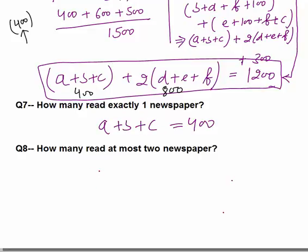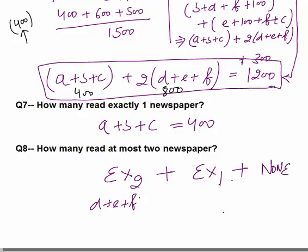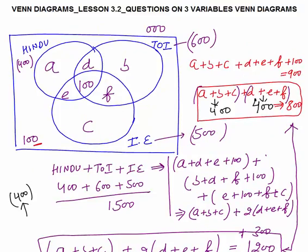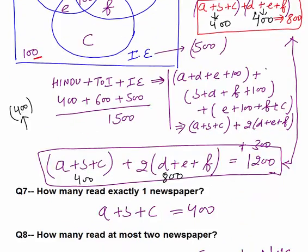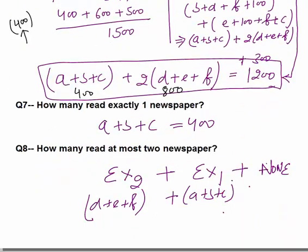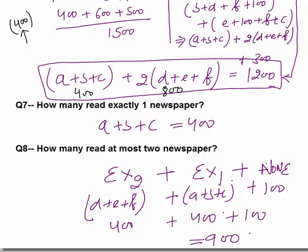Question 8: How many read at most 2 newspapers? At most 2 means exactly 2 + exactly 1 + none: (D + E + F) + (A + B + C) + 100 = 400 + 400 + 100 = 900. So 900 is the final answer. That was all about this lesson. Thank you.